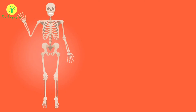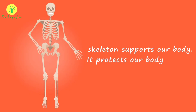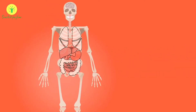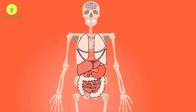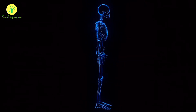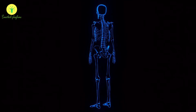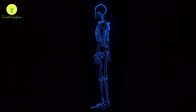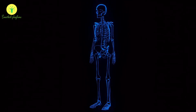The skeleton not only helps in movement but also protects internal delicate organs like heart, lungs, brain and so on. As we all know, bones are hard and rigid and can't be bent. So the question is, how are these movements even possible?